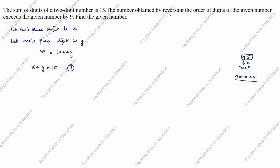Next, the number obtained by reversing the order of digits. Reversing the order means the tens place and ones place are swapped. The original number has x in the tens place and y in the ones place. After reversing, y comes to the tens place and x comes to the ones place. So the original number is 10x plus y, and the reversed number is 10y plus x.